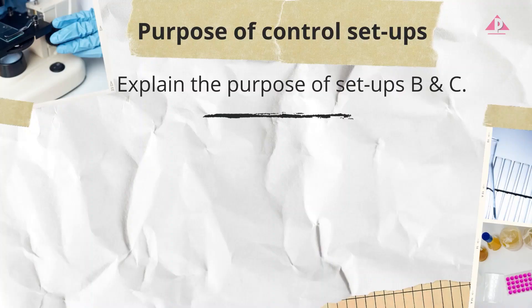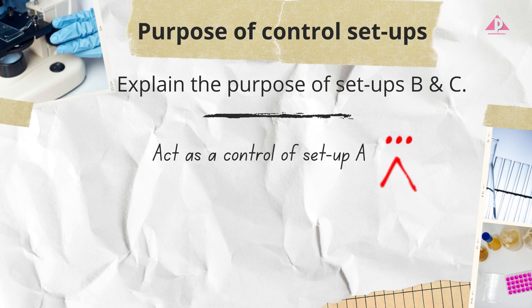Apart from identifying the experimental and control setups, students may also be asked to state the purpose of the control setup. Some students may write 'act as the control of setup A.' This is the function of the control setup; however, this answer is too vague and probably won't score any marks.